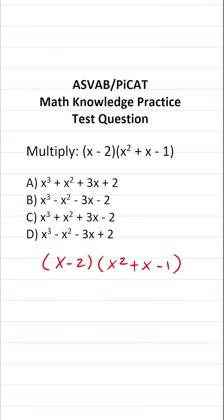So to multiply these two polynomials, we have to take x and multiply it by all three terms in this second polynomial. Then we have to take negative 2 and multiply it by all three terms in the second polynomial as well.